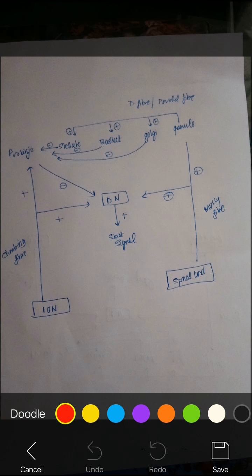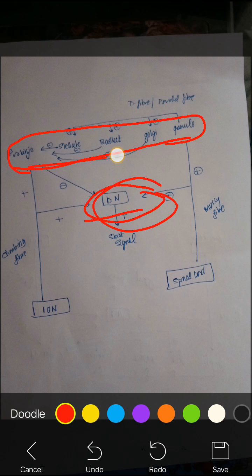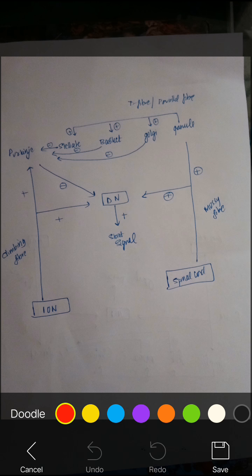These are all the cells: Purkinje, stellate, basket, Golgi, and granule. These are the nucleus. The cells are superficial and the nucleus are deep. The mnemonic to remember the deep nucleus is DEFG — that is dentate, emboliform, fastigial, and globus.